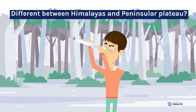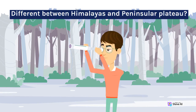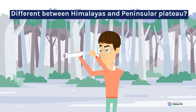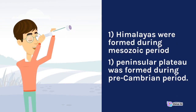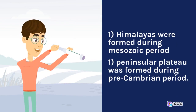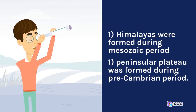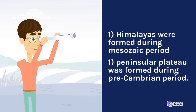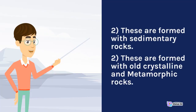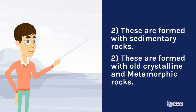Differences between Himalayas and Peninsular Plateau. One: Himalayas were formed during the Mesozoic period; Peninsular Plateau was formed during the Pre-Cambrian period. Two: Himalayas are formed with sedimentary rocks; Peninsular Plateau is formed with old crystalline and metamorphic rocks.